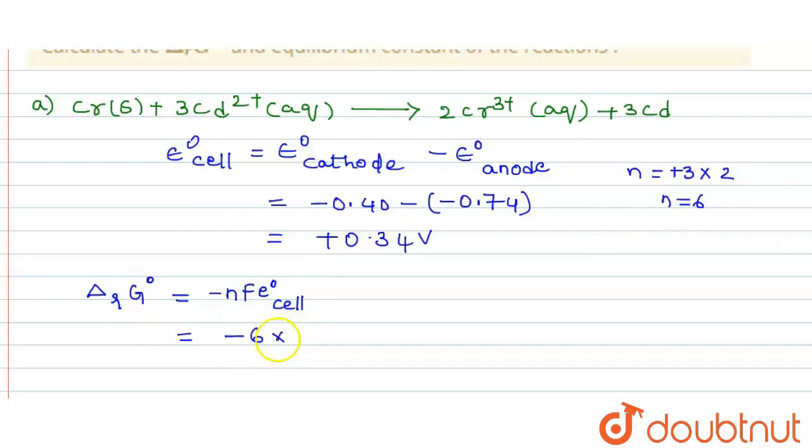Now, minus 6 into E° cell, we got as plus 0.34 volts. Now, F, we have to write 96400 into 0.34.